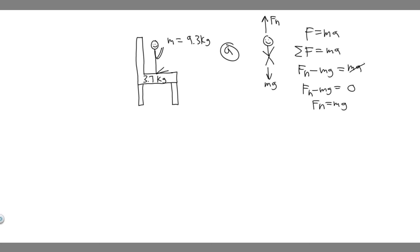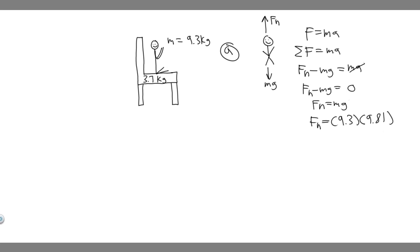This is a general rule: unless there are other forces acting on your object, the normal force is always going to equal the weight force. So F sub N equals mass times gravity. The mass of the child is 9.3 kilograms, so F sub N equals 9.3 times g, which is 9.81. So 9.3 times 9.81 gives us 91.233 — so the normal force is approximately 91 newtons. That's your answer to part A.